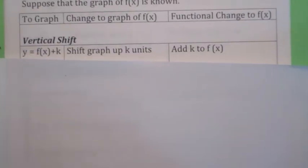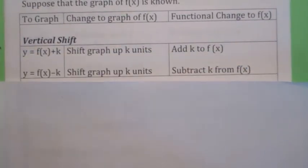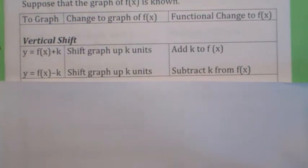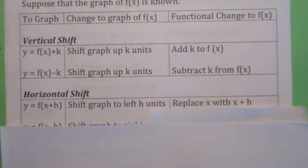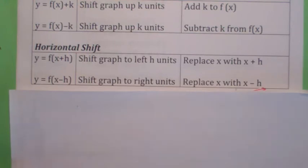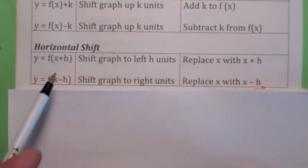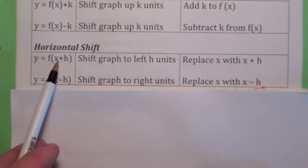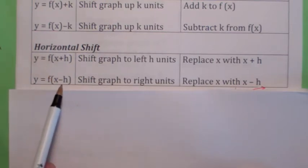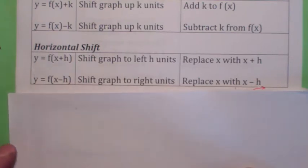We're going to talk about vertical shifts first. Suppose you know the graph of f of x. If you take the function f of x and you add k to the y coordinate, that turns out to be a vertical shift up. If you subtract k from the y coordinate, it's a vertical shift down k units. Don't get that confused with the horizontal shift, which can be a bit counterintuitive. If you replace x with x plus h in your function, that's actually a shift to the left h units. And if you replace x with x minus h, that's a shift to the right h units.